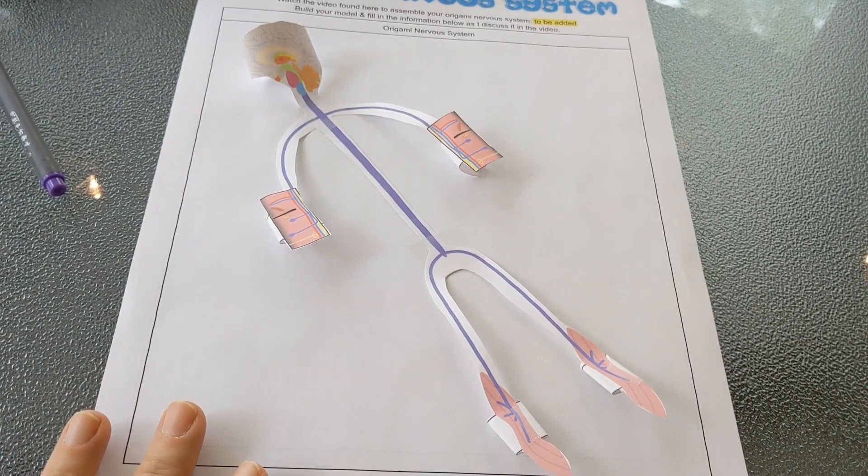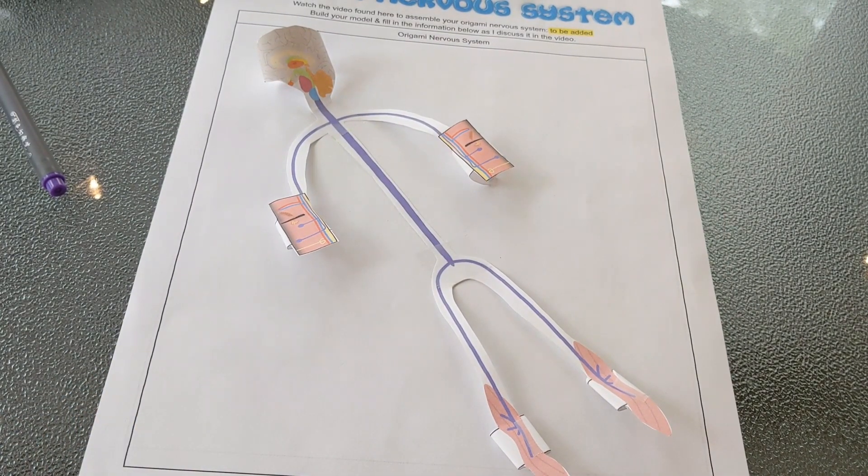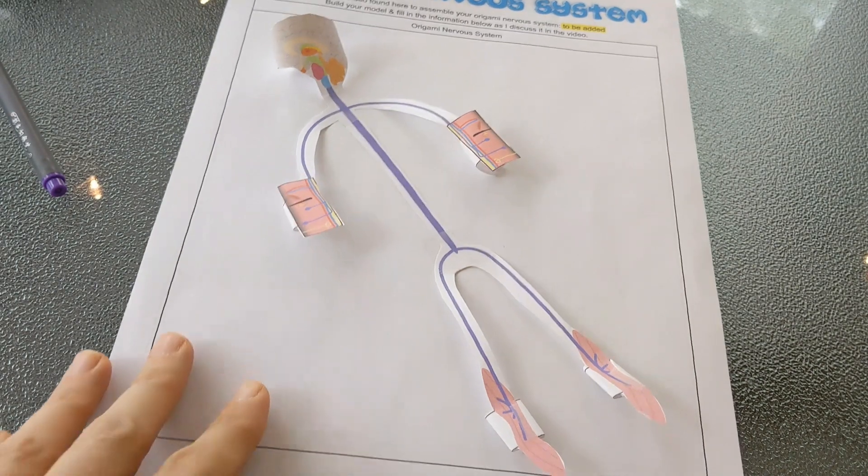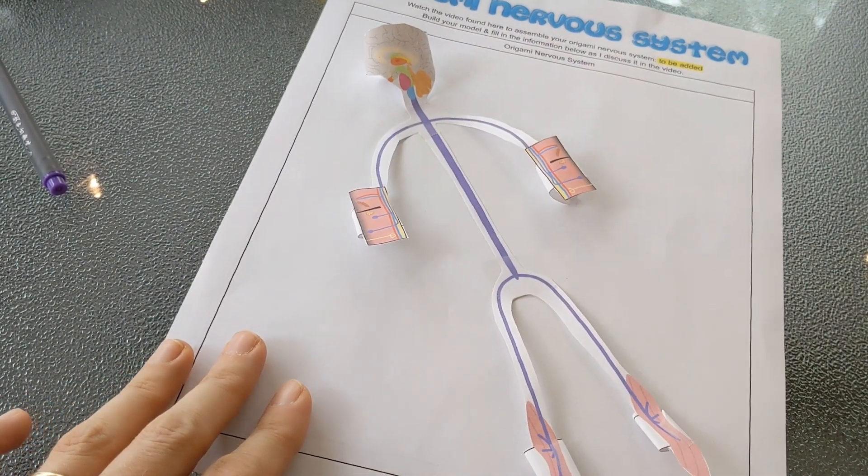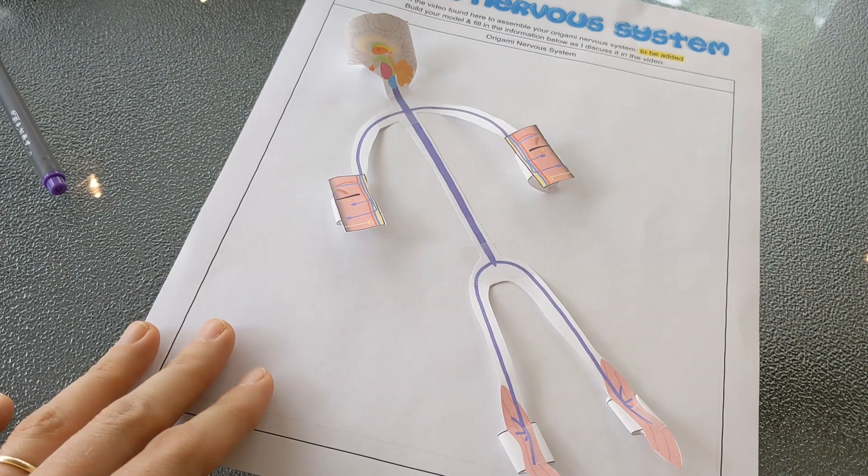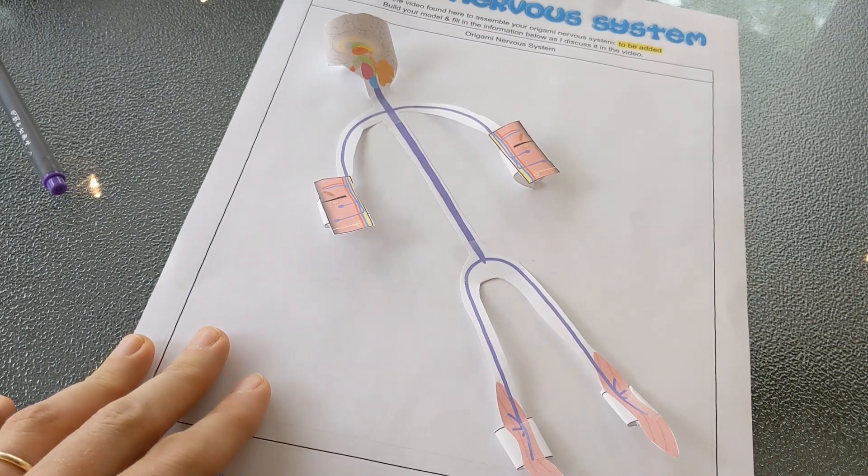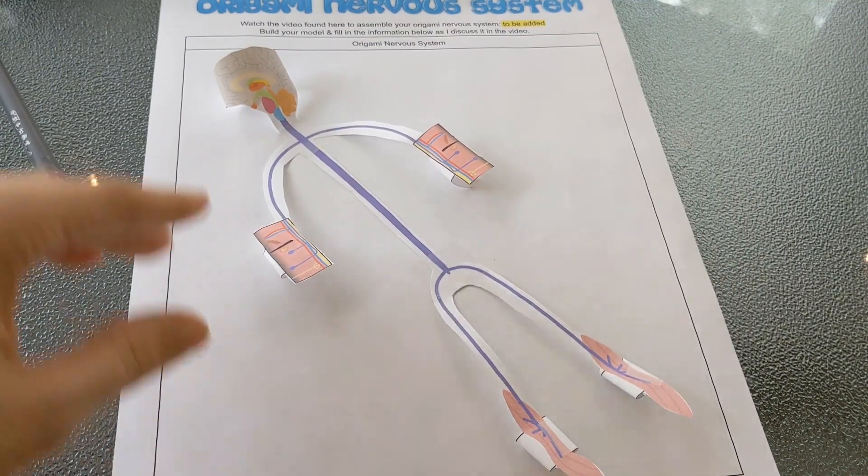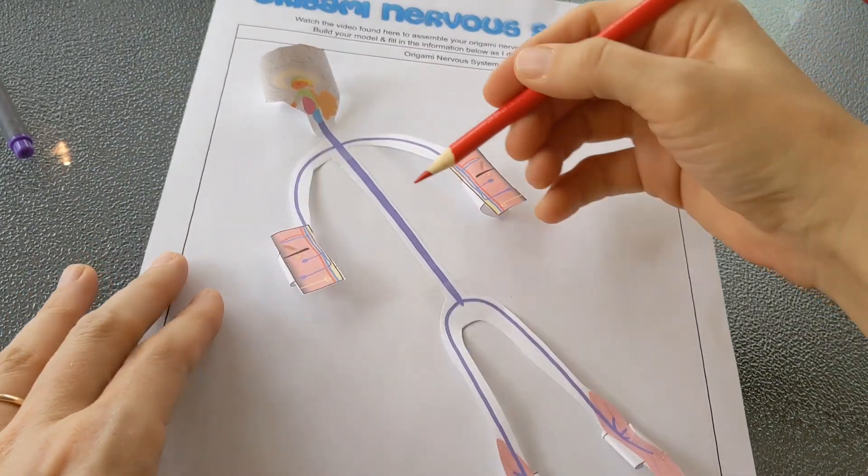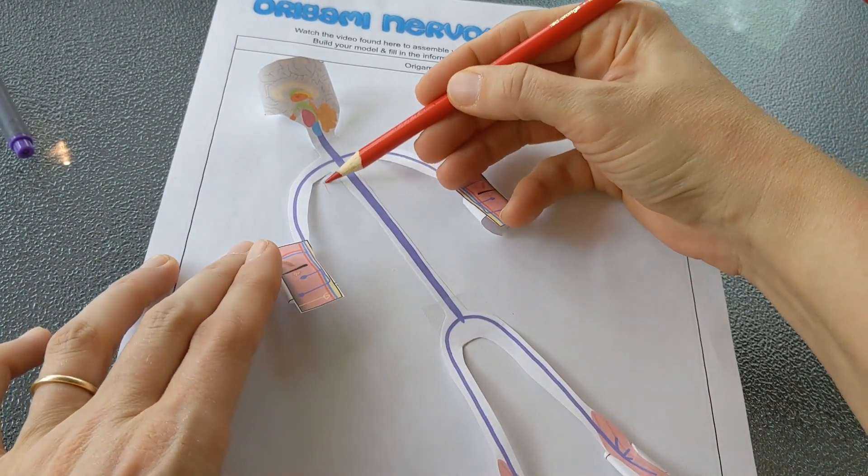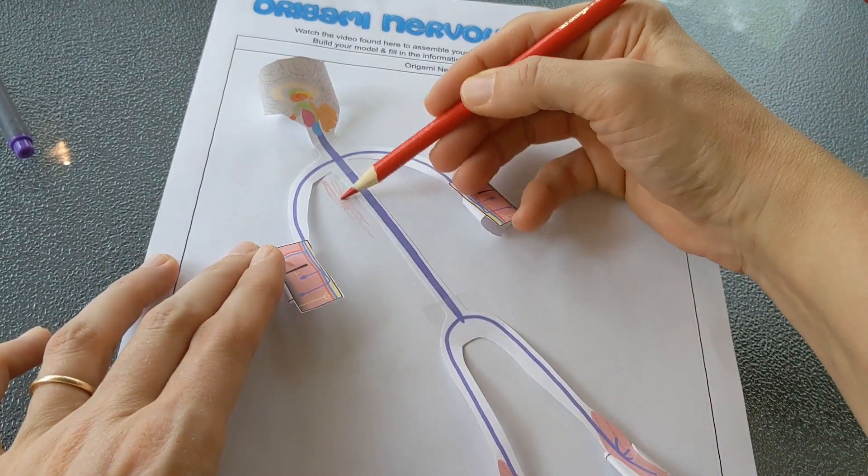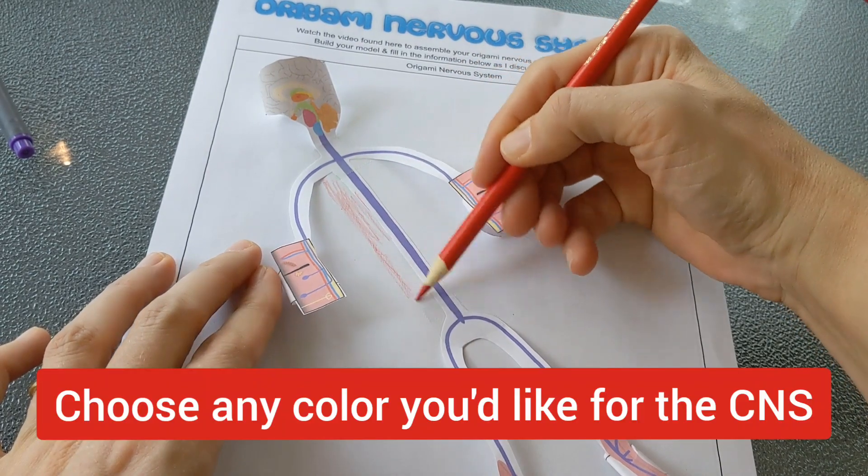Okay, so now I'm ready to start marking up my handout with some notes about this. The first thing that I want us to do is look at the difference between the two divisions of the nervous system. We have the central nervous system and the peripheral nervous system. I'm going to divide those up by coloring - you could use colored pencils or highlighters or markers.